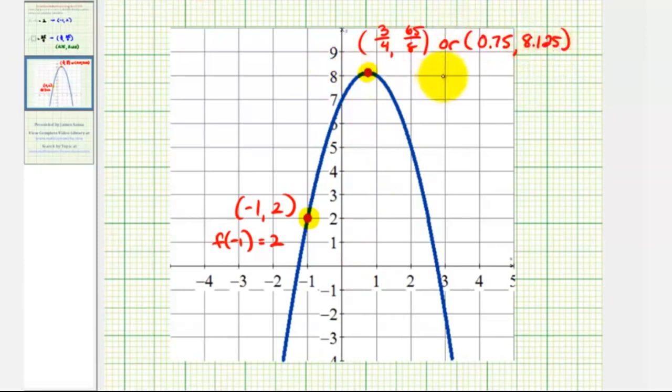And this is because we found that f(3/4) is equal to 65/8, or again, 8.125.